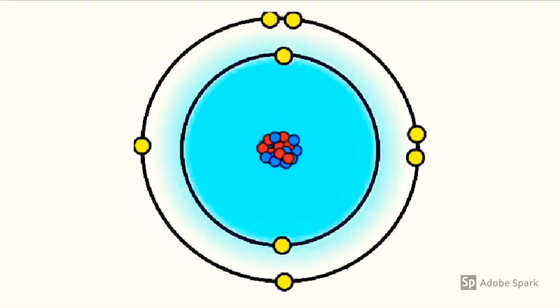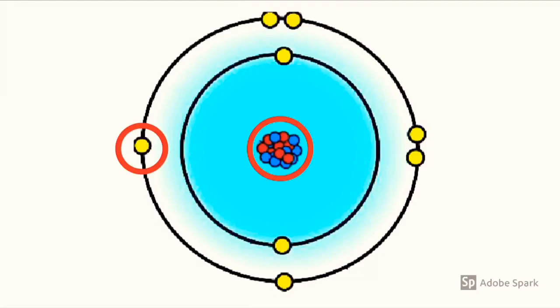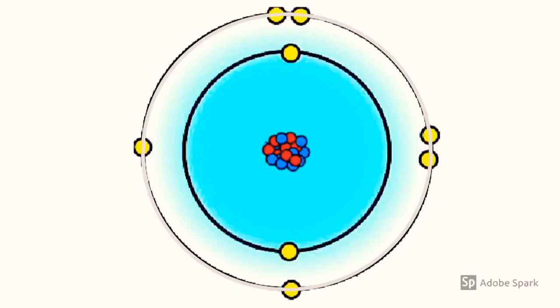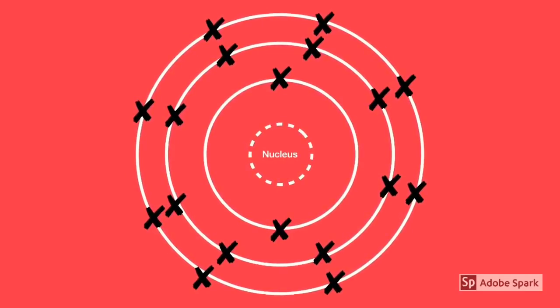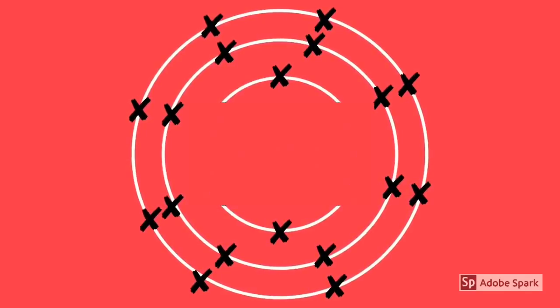We can now move on to electronic arrangement. This is an atom — more specifically, this is the model of the atom that you need to know to understand basic atomic structure. In the center of this atom is the nucleus, comprised of protons and neutrons. These things all around the atom are called the electrons. They orbit the atom in shells, sometimes called energy levels. The first shell can only hold two electrons, the second shell can hold eight, and the third shell can also hold eight — well, sort of, but for the basics it's eight. The fourth shell can hold a number you don't need to know for the basics, and in fact there is no limit to the amount of shells, but let's keep it simple.